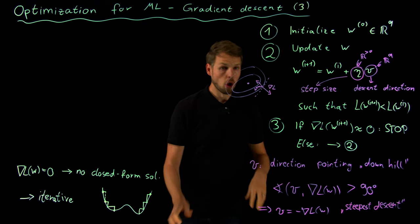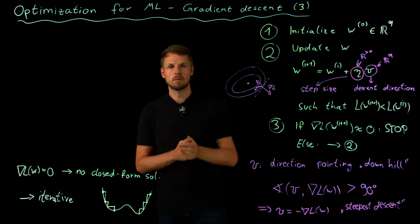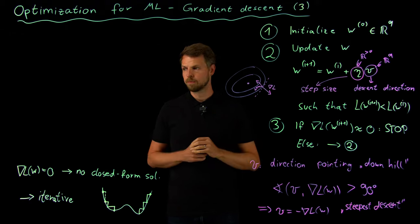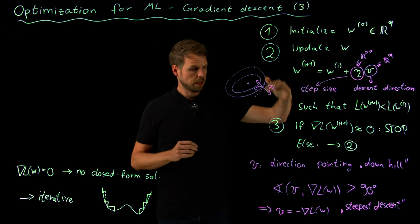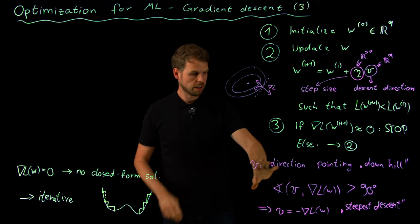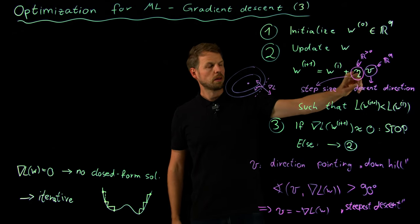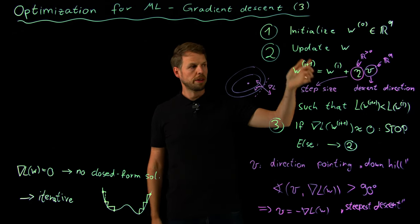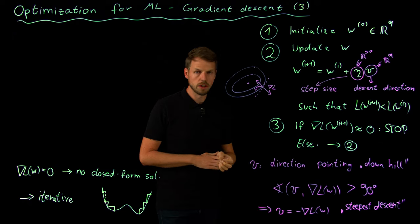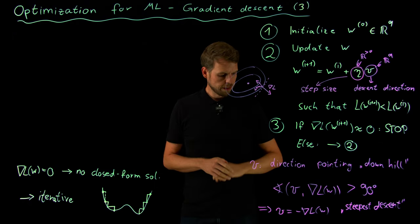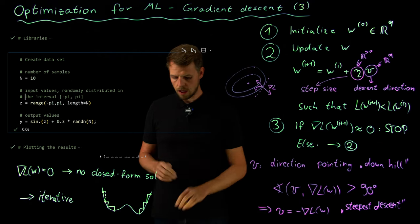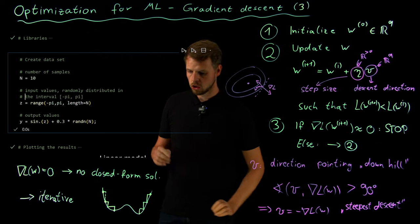It's the steepest possible descent direction, so we are descending as steeply as possible and by this we hope to approach our target as quickly as possible. Now we have defined a descent direction and are multiplying it with an appropriate step length. Before discussing that, let's look at a code example in Julia.